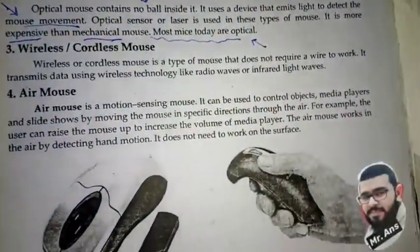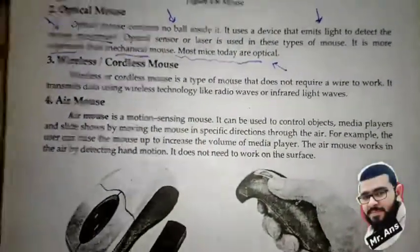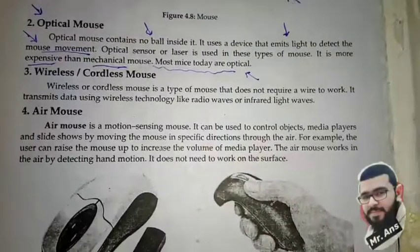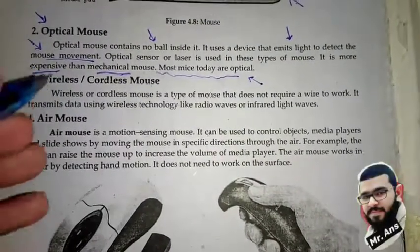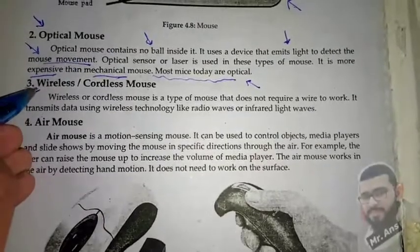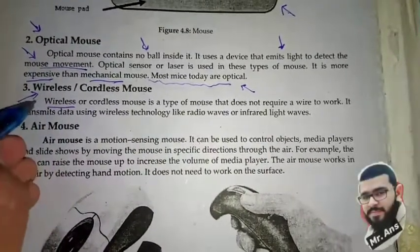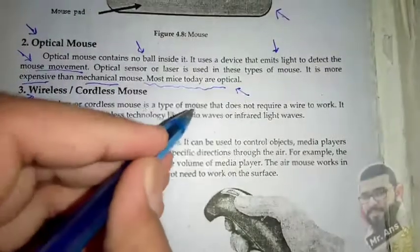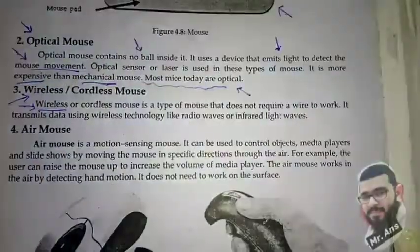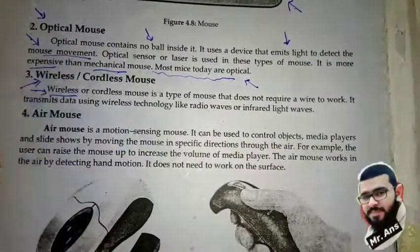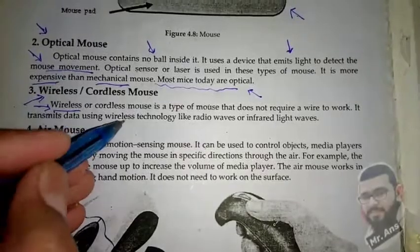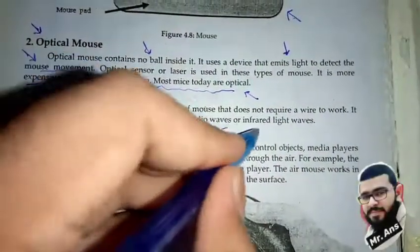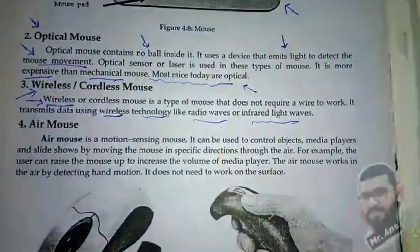Next we have the wireless mouse. A wireless mouse needs no wire — it is a type of mouse that doesn't require a wire to work. It transmits data using wireless technology like radio waves or infrared light waves.